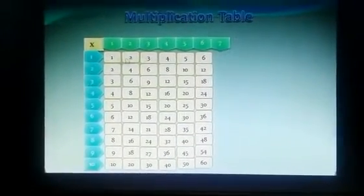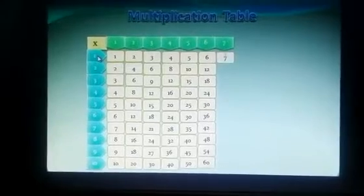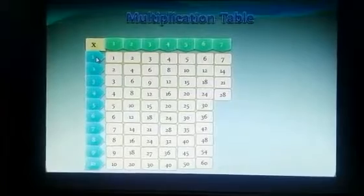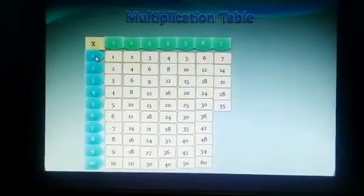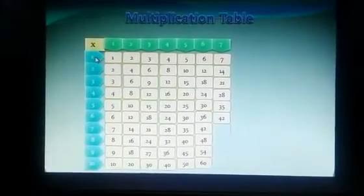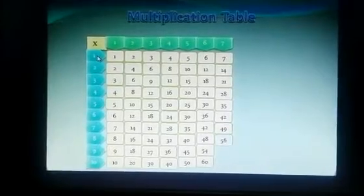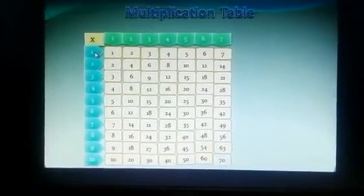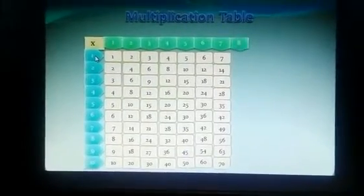Now, times table of 7. 7 times 1 is 7, 7 times 2 is 14, 7 times 3 is 21, 7 times 4 is 28, 7 times 5 is 35, 7 times 6 is 42, 7 times 7 is 49, 7 times 8 is 56, 7 times 9 is 63, 7 times 10 is 70.